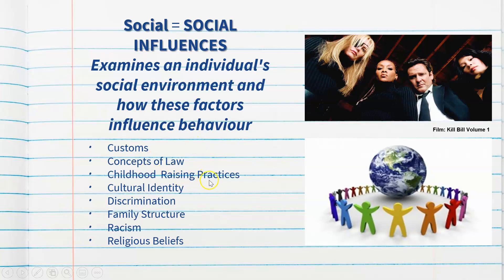Childhood raising practices by the family or parents — whether particularly harsh, lenient, or neglectful — may also contribute to criminal behaviour. Cultural identity and discrimination may be huge factors as well, depending on the individual case; receiving discrimination may lead to certain crimes being committed because of racism or related social issues. Family structure and certain religious beliefs may also contribute to the decrease or increase of criminal behaviour.